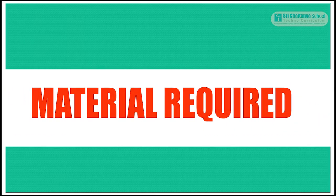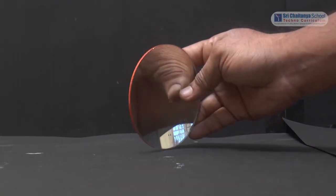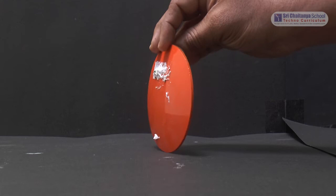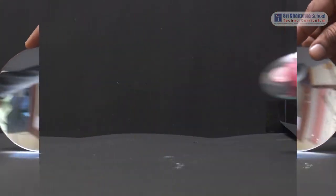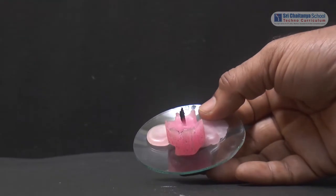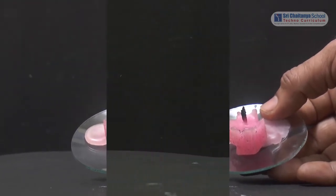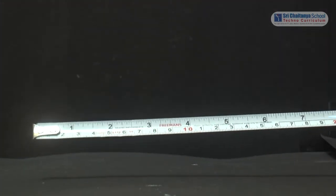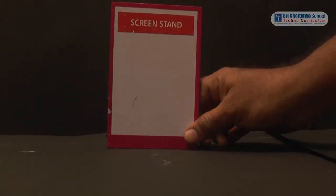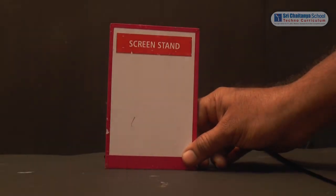To conduct this experiment, the materials required are a concave mirror of known focal length, a candle, a measuring tape, and a screen stand to trace the image.